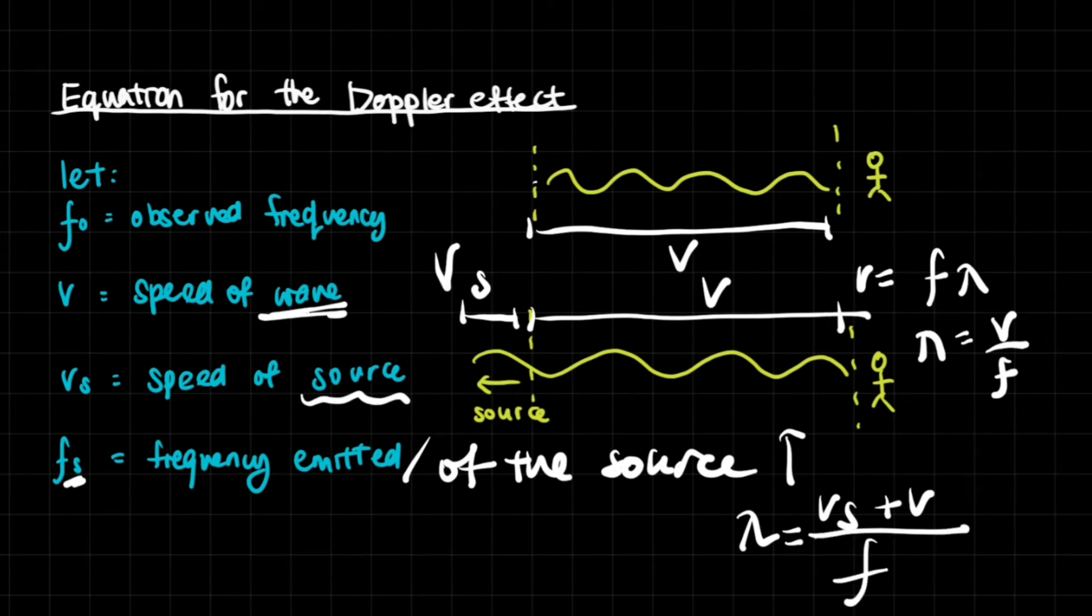Let's note this as S because this is the distance that the source has moved within one second. Therefore, it is the velocity of the source, and this is just the velocity of the sound as we've already established. In this case, the wavelength is V_S plus V.